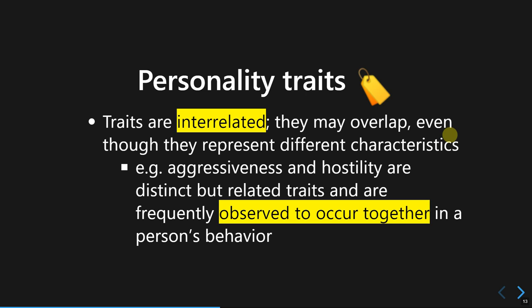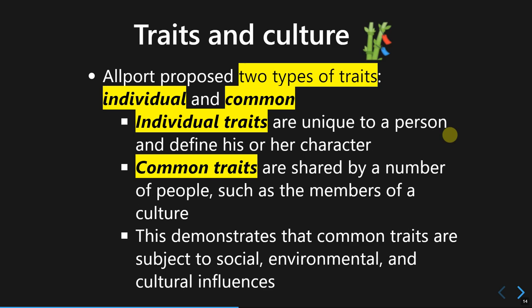Personality traits can sometimes be interrelated and may overlap, or they could represent very different characteristics. For example, taking aggressiveness and hostility — people could be aggressive and hostile at the same time, but aggressiveness and hostility are completely two different traits. Even though they are related and sometimes occur together, those traits are completely distinct from one another.